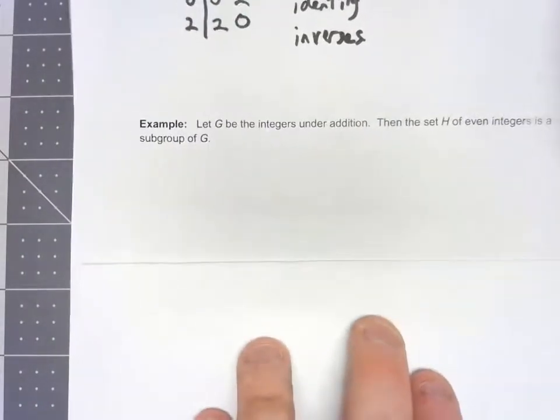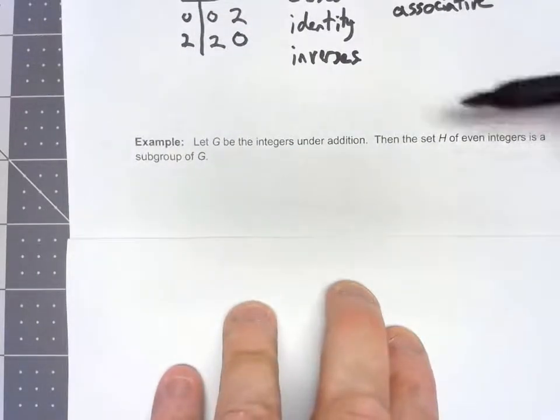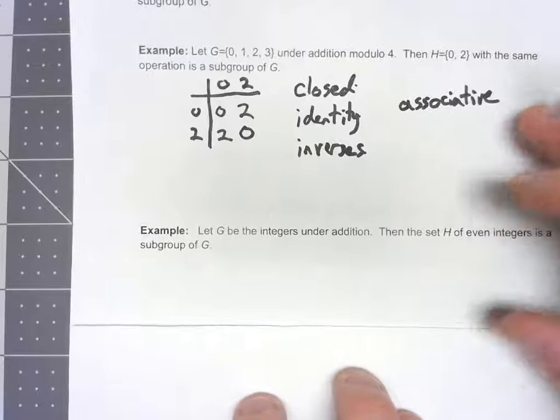Another example. This time we've got an infinite example. We're going to start with the integers. And then we're going to look at the set of even integers. Well, I basically need to look at those same exact properties we did right here.